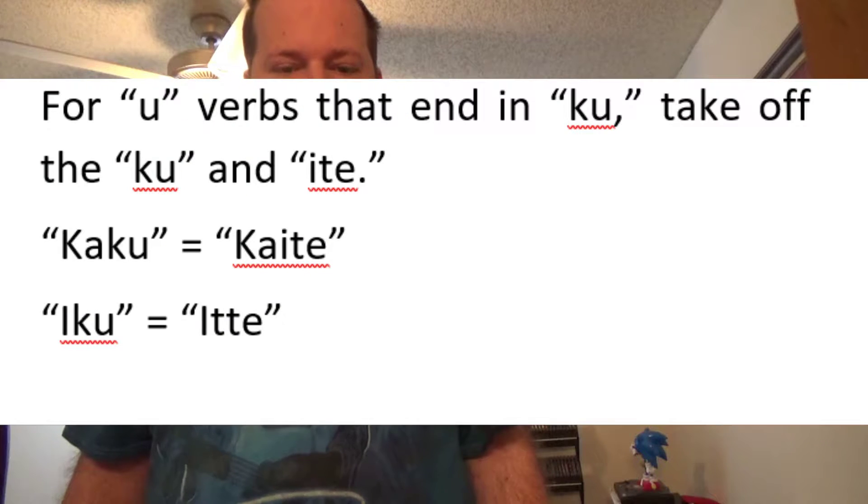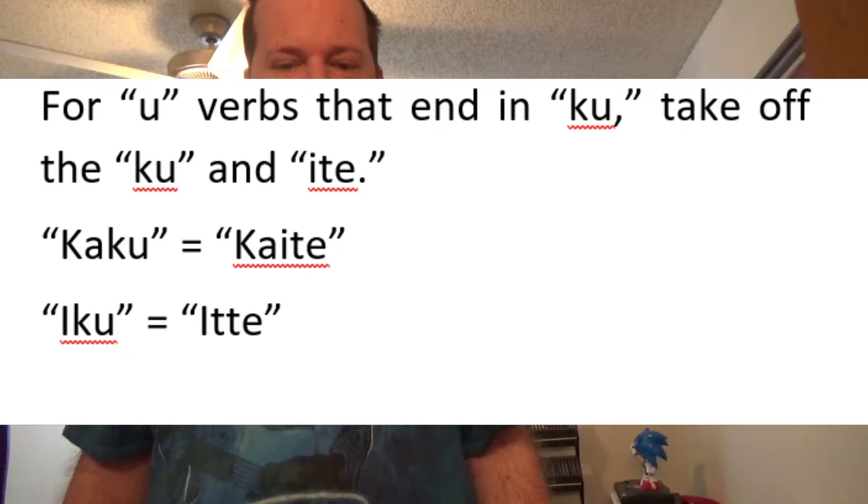For u-verbs that end in ku, you take off the ku and add ite. Kaku becomes kaite. However, the exception to this rule is iku, which conjugates as itte.